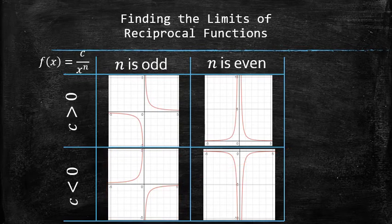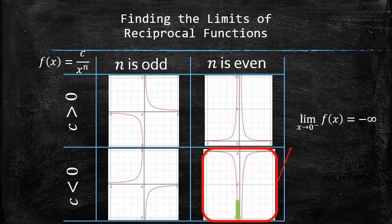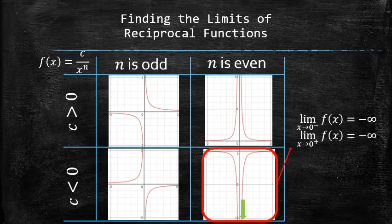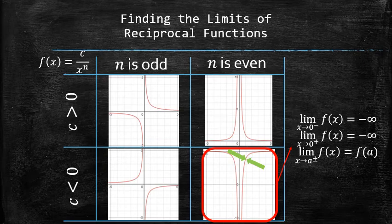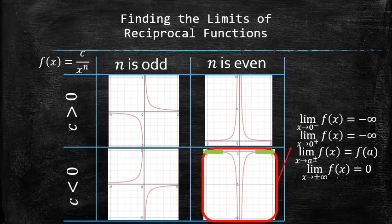Finally, the behavior of a reciprocal function with a negative coefficient and even degree in the denominator can be described with the following limits: f approaches negative infinity as x approaches 0 from the left, and f approaches negative infinity as x approaches 0 from the right. For any point other than 0, f approaches its output at that point, because reciprocal functions are continuous everywhere except 0. And f approaches 0 as x approaches positive or negative infinity.